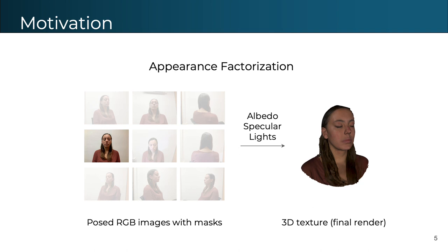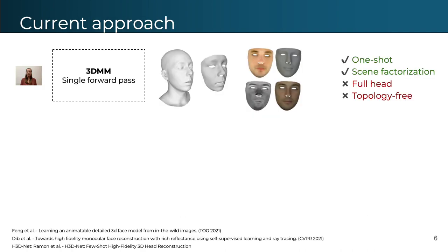In order to realistically render the captured models under new lighting conditions, it is not enough to recover the 3D geometry, but we also need to estimate the intrinsic properties of the scene. Depending on the rendering model, we will estimate the albedo, specular, and environment illumination.